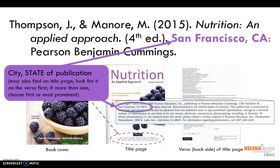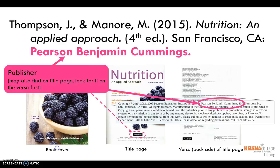Next, list the city and state of publication. The verso of the title page will have the most accurate information, usually located near the copyright date. You can also look on the title page. If more than one location is listed, choose the first or most prominent. Finally, the publisher is named. This is usually found on the verso of the title page near the publication date and place. The title page may also have this information.